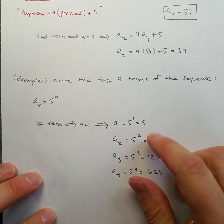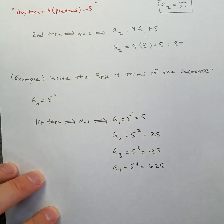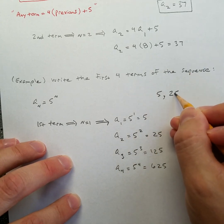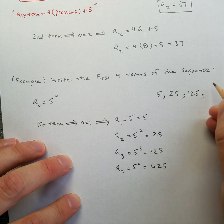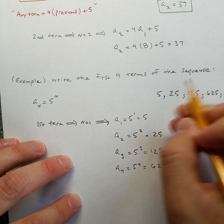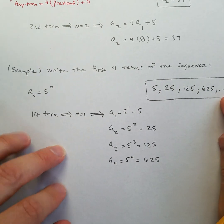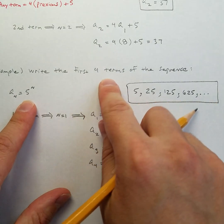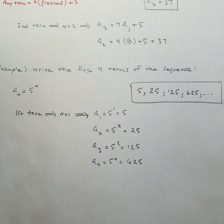So there are your first four terms — the first term, second term, third term, and fourth term. The sequence goes: five, 25, 125, 625, and so on. There's no reason you wouldn't find more terms; they only asked for the first four, but the list could go on from there.